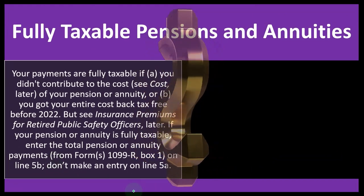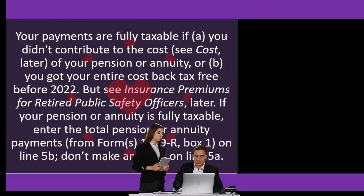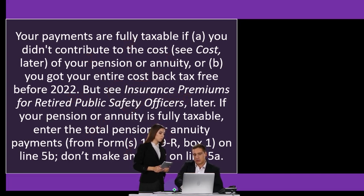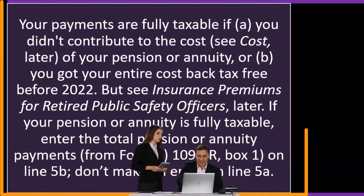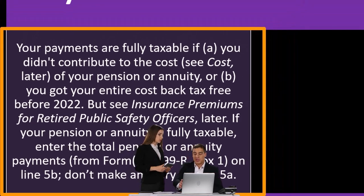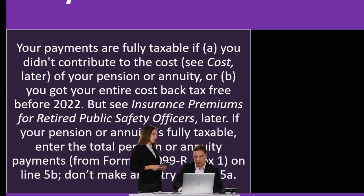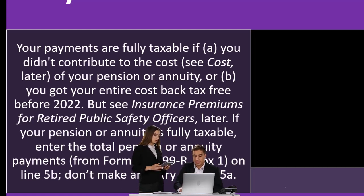Regarding fully taxable pensions and annuities: your payments are fully taxable if A, you don't contribute to the cost of your pension or annuity, or B, you got your entire cost back tax-free before 2022. If your pension or annuity is fully taxable, enter the total pension or annuity payment from Form 1099-R box one on line 5B. Don't make an entry on line 5A.